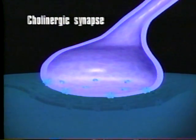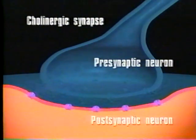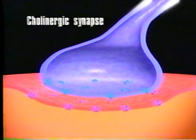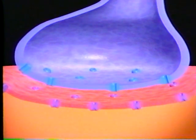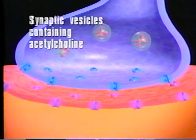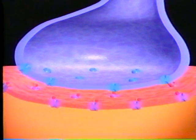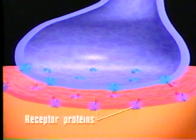The neuron that transmits the impulse across the synapse is called the presynaptic neuron. The receiving cell is called the postsynaptic neuron. When an action potential reaches the synaptic knob of the presynaptic neuron, the wave of depolarization triggers the opening of voltage-regulated calcium channels. Calcium ions enter the cell and cause synaptic vesicles containing acetylcholine to release their contents into the synaptic cleft, where diffusion carries the acetylcholine toward the postsynaptic cell membrane. The acetylcholine binds to receptor proteins on the postsynaptic membrane, triggering the opening of chemically regulated ion channels, depolarizing the postsynaptic membrane.